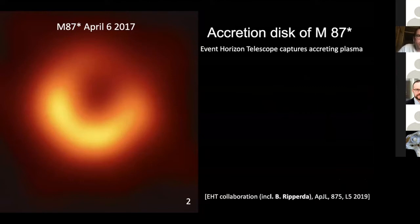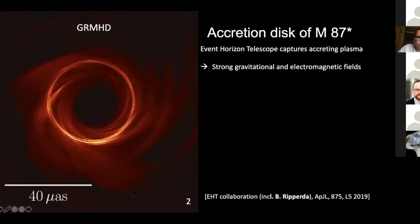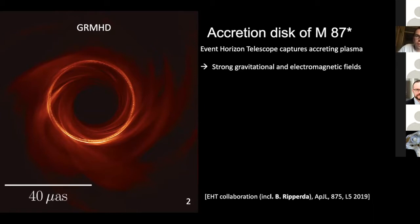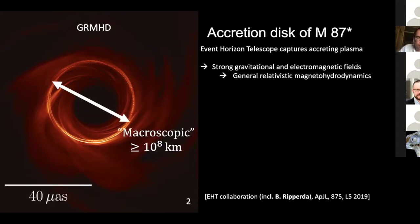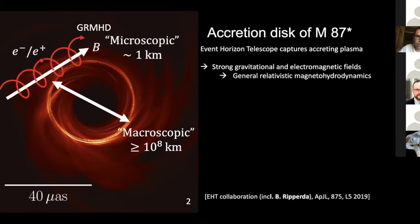I assume you've all seen this image: the accreting plasma around the M87 black hole. You can simulate this with general relativistic magnetohydrodynamics. We know that this plasma lives in a strong gravitational and electromagnetic field, so we need a combination of Maxwell's equations and fluid dynamics in a general relativistic framework. We know from the observations that the macroscopic scale of the event horizon is larger than 10 to the 8 kilometers.